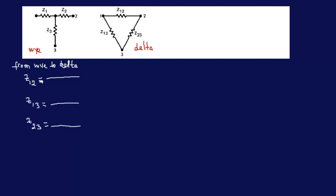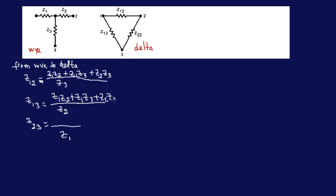So z12 — there's no 3, so I put z3 in the bottom. Z13 — there's no 2, so I put z2 in the bottom, and here is z1. Then on top is all the same everywhere: z1·z2 plus z1·z3 plus z2·z3. That's the same on top everywhere.